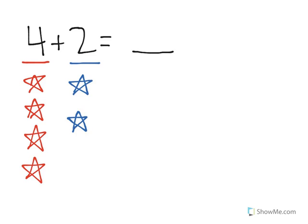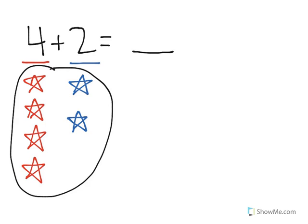Now what we want to find out is how many stars there are all together. And the way that we do that is we count how many stars there are. 1, 2, 3, 4, 5, 6. So if we start with 4 and we add 2, we'll get a total of 6.